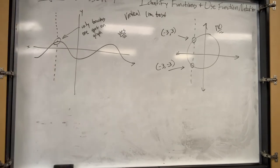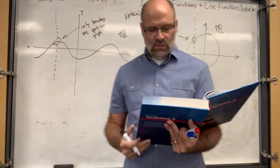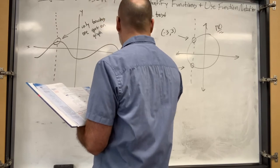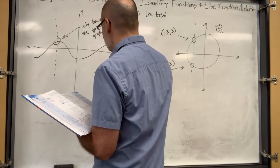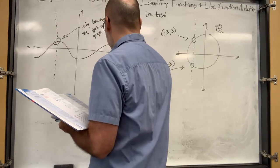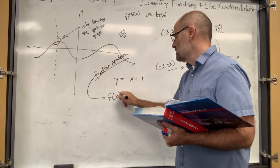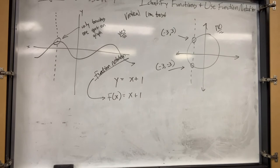Function notation is really easy. Instead of y, it uses f of x. We've dealt with f of x before and it's kind of confusing because f of x looks like it's multiplying something, but it's not. It's just a notation - like x plus y equals x plus one. Function notation is just saying 'the function of x' - to take that x and add one to it.